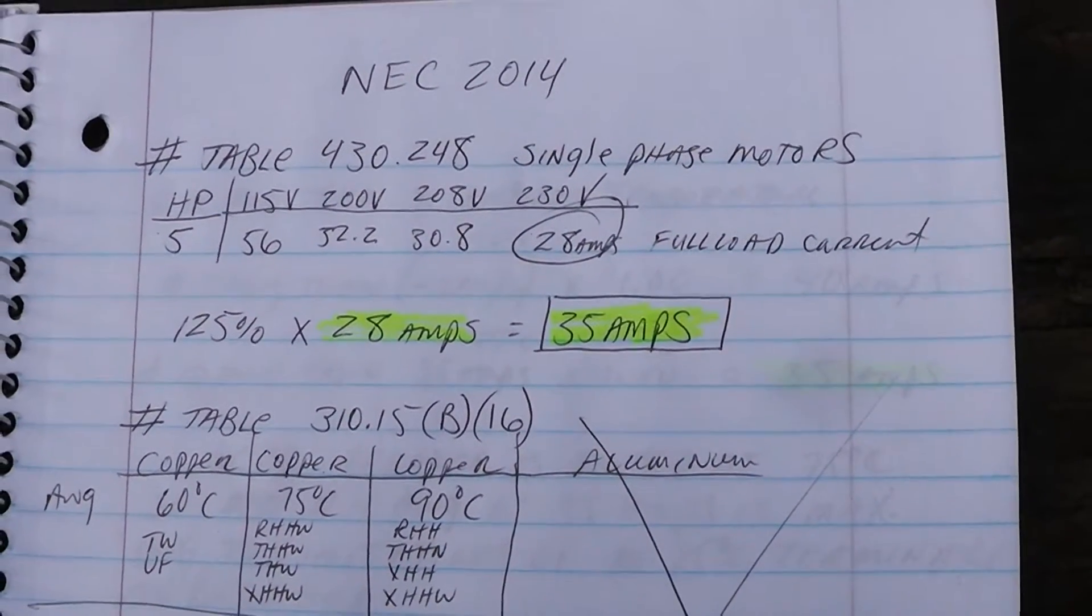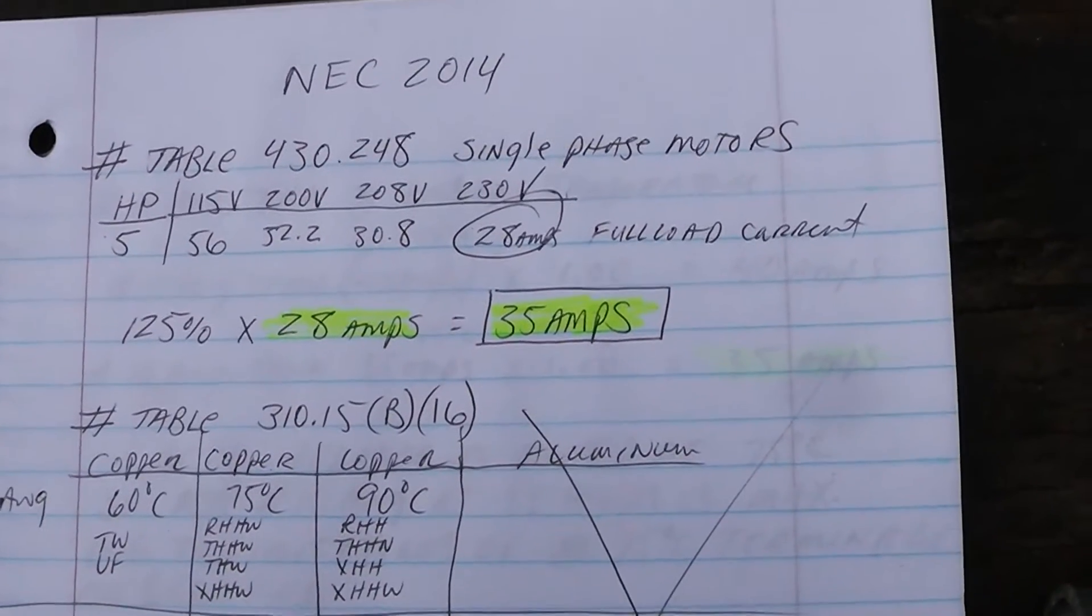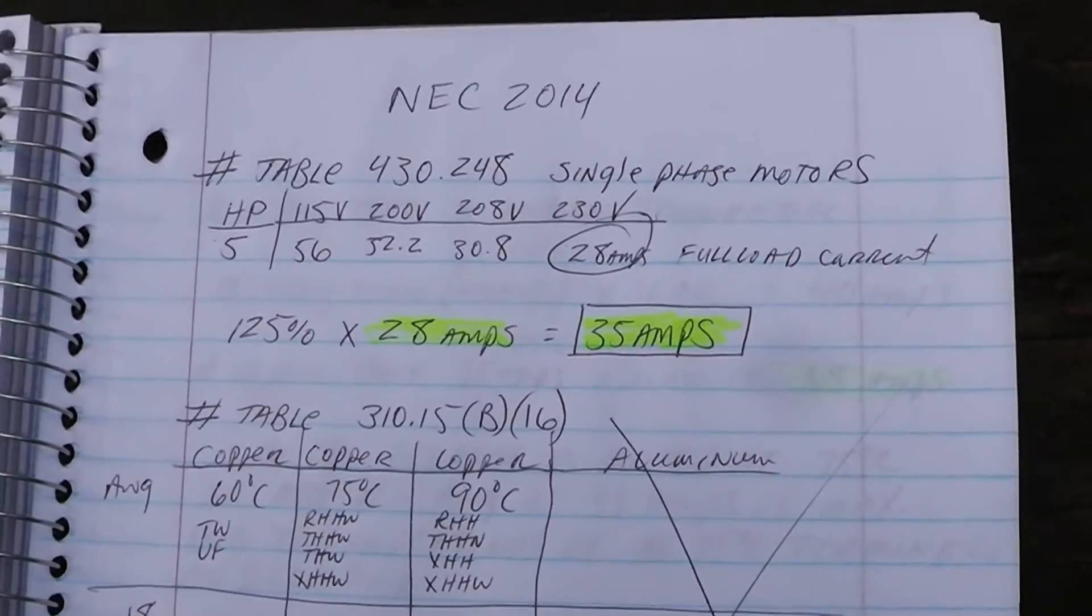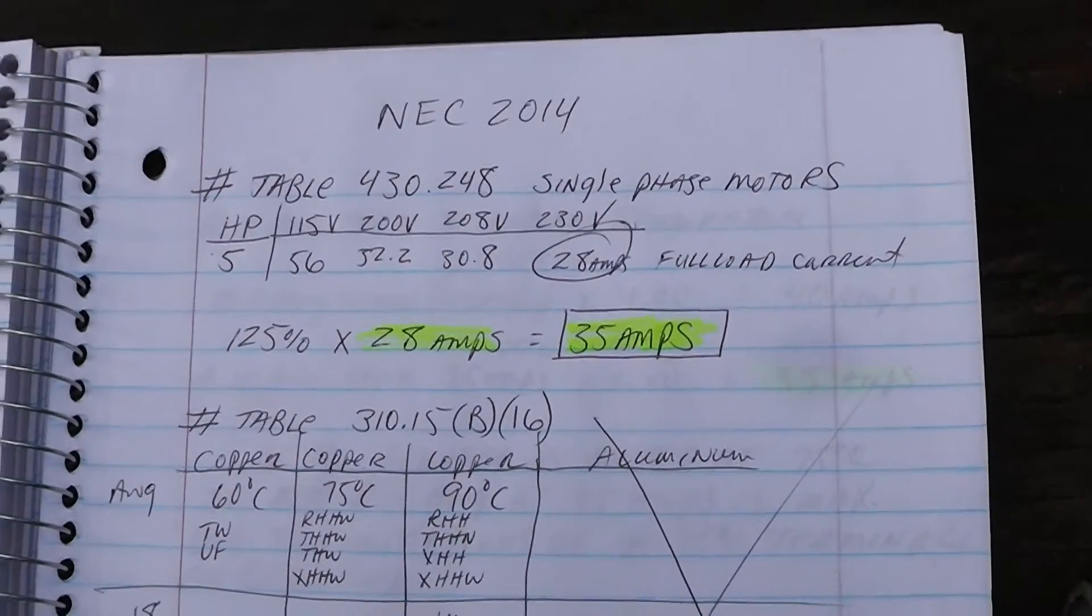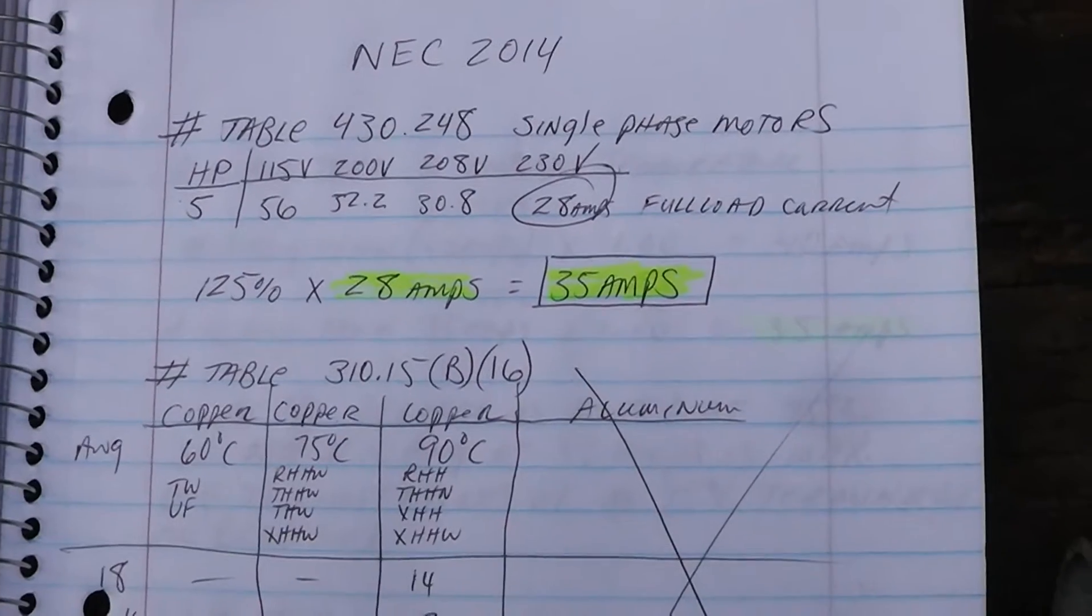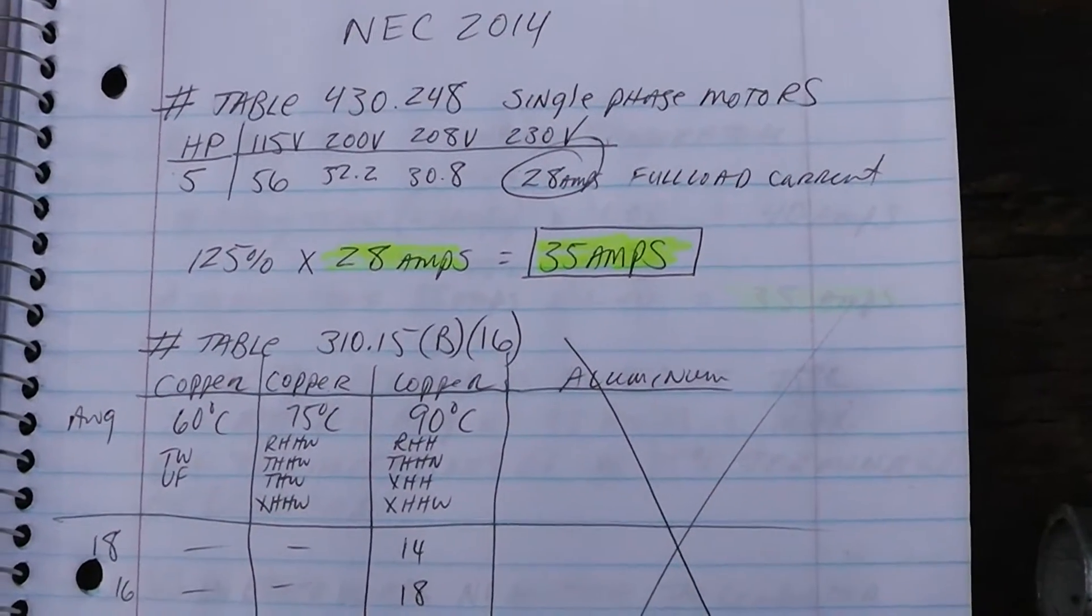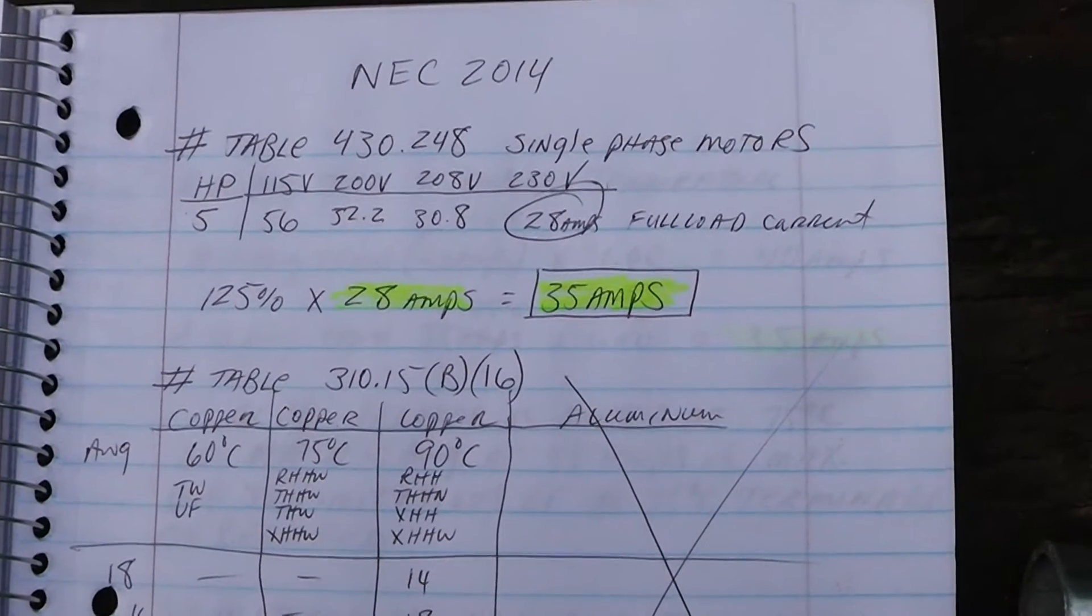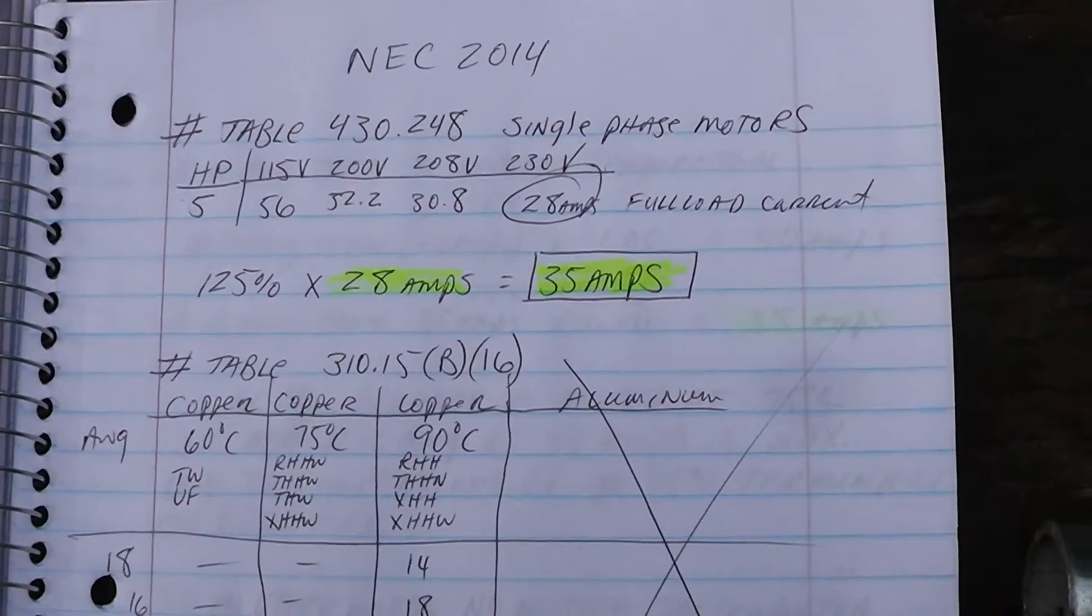Okay guys, I'm going to try to explain how I arrived at the size of wire and the overcurrent protection device. This is Article 430 of the National Electric Code and it is kind of confusing a little bit.